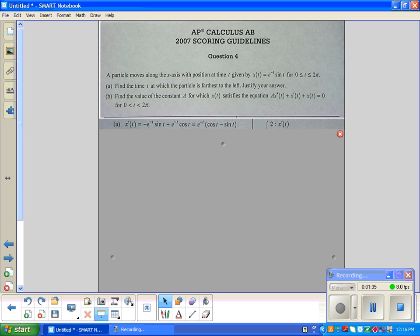The extreme value theorem at this point tells us not only to check the critical points from the derivative, but also to check the endpoints. You set this equal to zero. When you factor out e^(-t), you've got to check when do cosine and sine equal each other? What triangle?